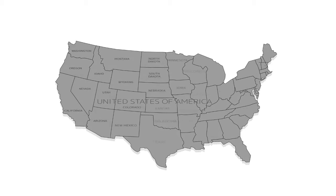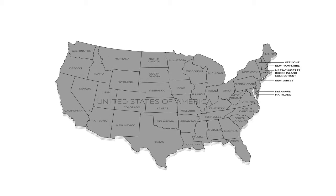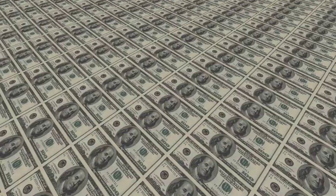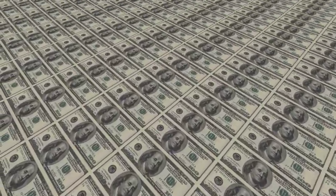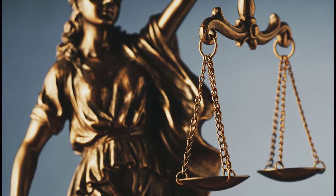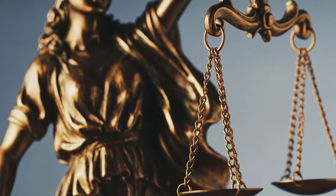After America gained its independence from England, the states were reluctant to give up power to a central government. Before the Constitution was adopted, America was governed by a document known as the Articles of Confederation. The Articles of Confederation created a federal government that was extremely weak. It couldn't coin money, it couldn't tax, it had no judicial system, and amending it was virtually impossible.